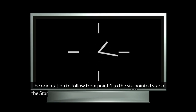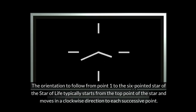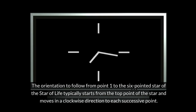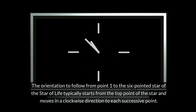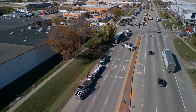The orientation to follow from point one to the six-pointed star of the Star of Life typically starts from the top point of the star and moves in a clockwise direction to each successive point. The six points of the Star of Life.